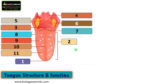In this video, let us understand tongue structure and function within five minutes. The tongue is a muscular organ located in the mouth that is essential for various functions including taste, swallowing, and speech. It is covered by a moist tissue known as a mucosa and is rich in blood vessels.